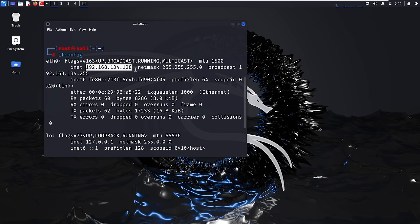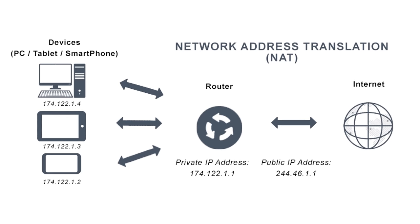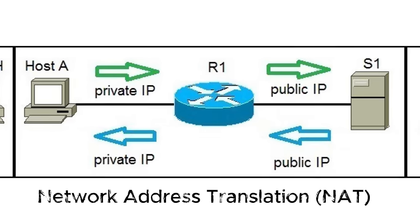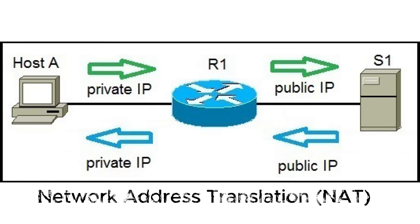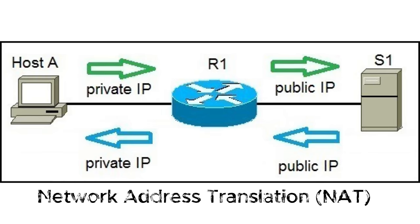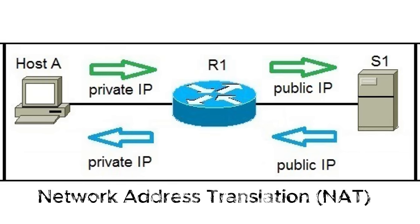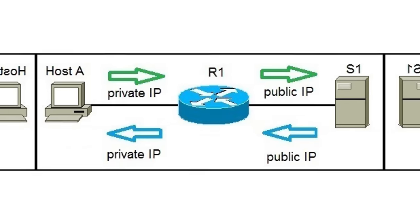For internet communication, your private IP address needs to be translated into a public IP address by a network address translation, or NAT, device. This translation process allows devices within your local network to access the internet using a shared public IP address, since private IP addresses are not unique and cannot be used directly on the internet. When a machine inside the LAN wants to communicate over the internet, it sends a request to the NAT device, which records the internal IP address in a table and converts it to the external IP address of the router. When the response returns, the NAT device forwards the packet back to the correct internal machine — all seamlessly and transparently to the user.